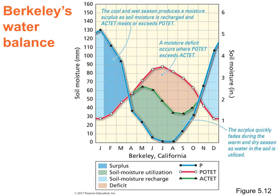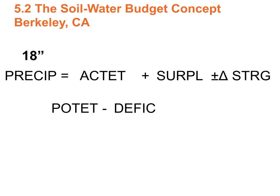You can calculate all of this month by month. In lecture, we'll just do the numbers for a year overall. For Berkeley, they get about 18 inches of rainfall, but the environment needs 36 inches — the POTET. So with 18 inches of rain but needing 36, the deficit is 18 inches. The ACTET is 18 inches because that's all we had. If you have a deficit, you can't have a surplus. Berkeley ended up with a deficit of 18 inches, meaning if you had plants outside, you'd need to add about 18 inches of water over the year.